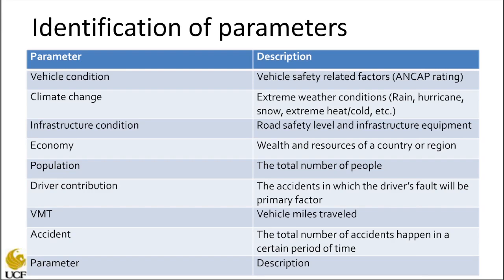The major parameters are: vehicle condition based on safety-related factors; climate change, which we look at based on extreme weather conditions; infrastructure condition, road safety level, and infrastructure equipment; economy, looking at wealth and resources; population and driver contribution — the accidents in which the driver's fault is the primary factor; vehicles miles traveled; and accidents — the total number of accidents.